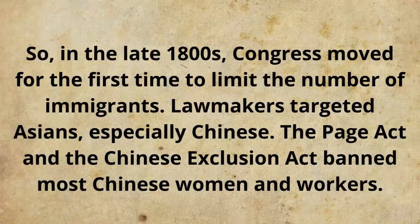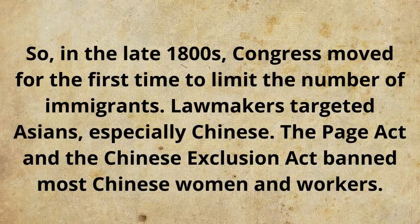So, in the late 1800s, Congress moved for the first time to limit the number of immigrants. Lawmakers targeted Asians, especially Chinese. The Page Act and the Chinese Exclusion Act banned most Chinese women and workers.